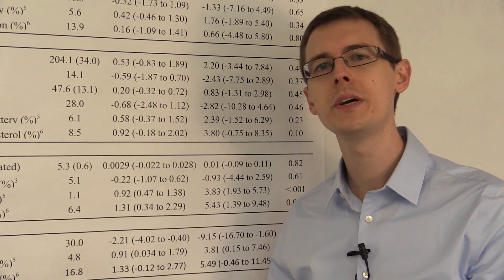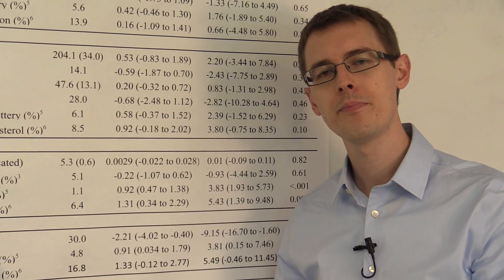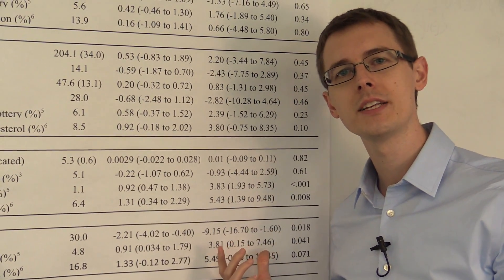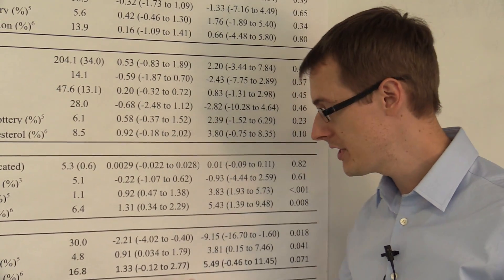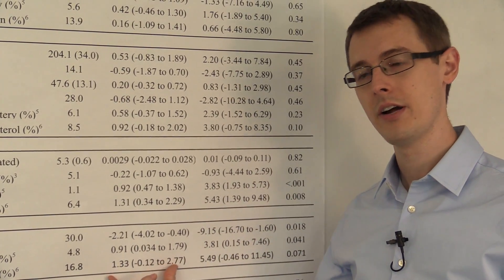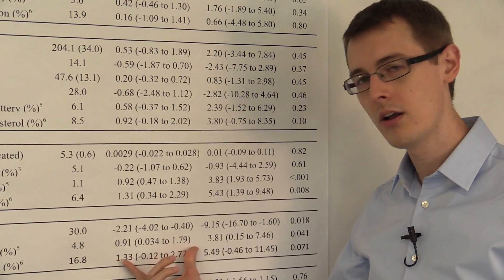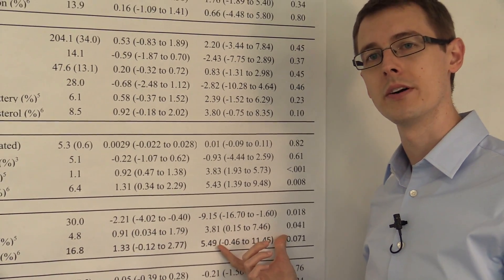And once we solve for this problem by using the instrumental variables analysis, we'll get a larger effect. That's exactly what we see happening here. The intention-to-treat numbers are all smaller than the two-stage least squares estimates.